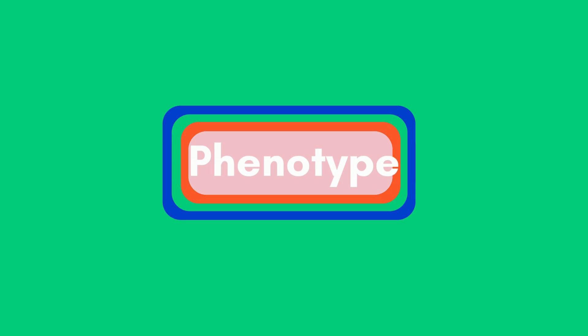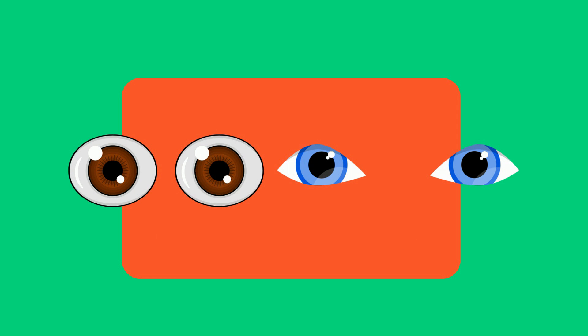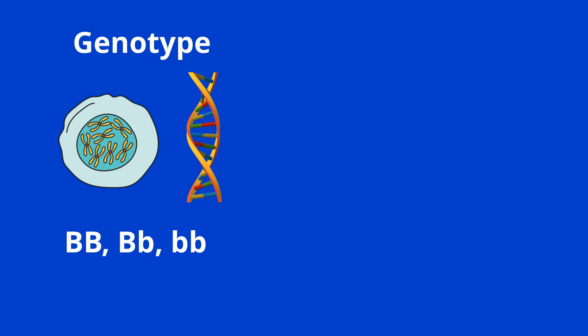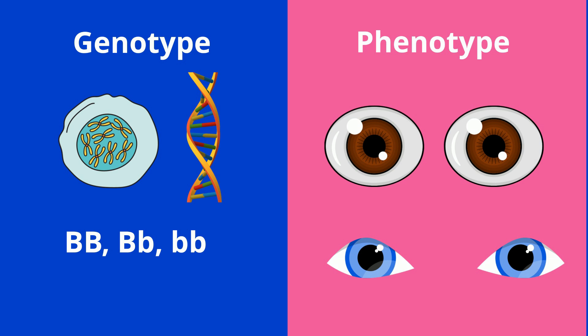The phenotype, on the other hand, will be the expression of the trait. In this example, you have two phenotypes: brown eyes or blue eyes. So in summary, the genotype is the genetic code of a trait and the phenotype is the expression of the trait.